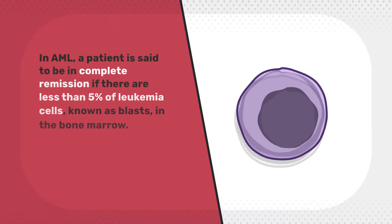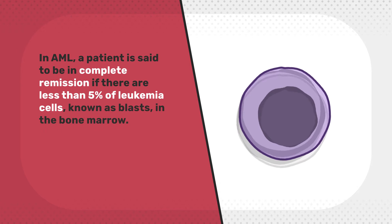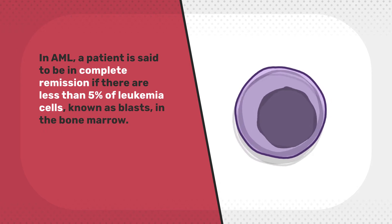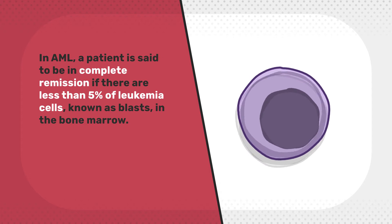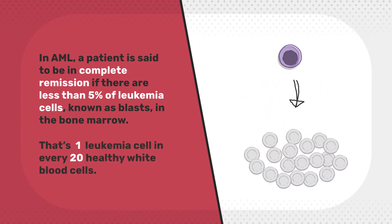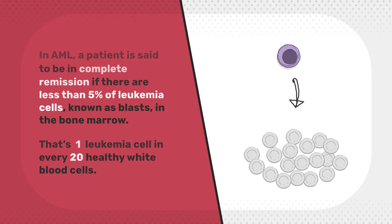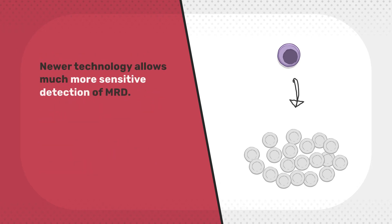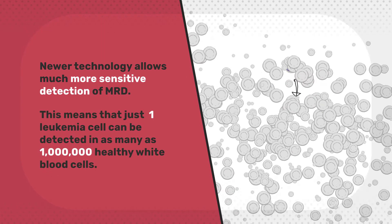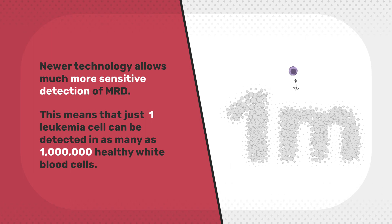In AML, a patient is said to be in complete remission if there are less than 5% of leukemia cells, known as blasts, in the bone marrow. That's one leukemia cell in every 20 healthy white blood cells. Newer technology allows much more sensitive detection of MRD — just one leukemia cell can be detected in as many as 1 million healthy white blood cells.